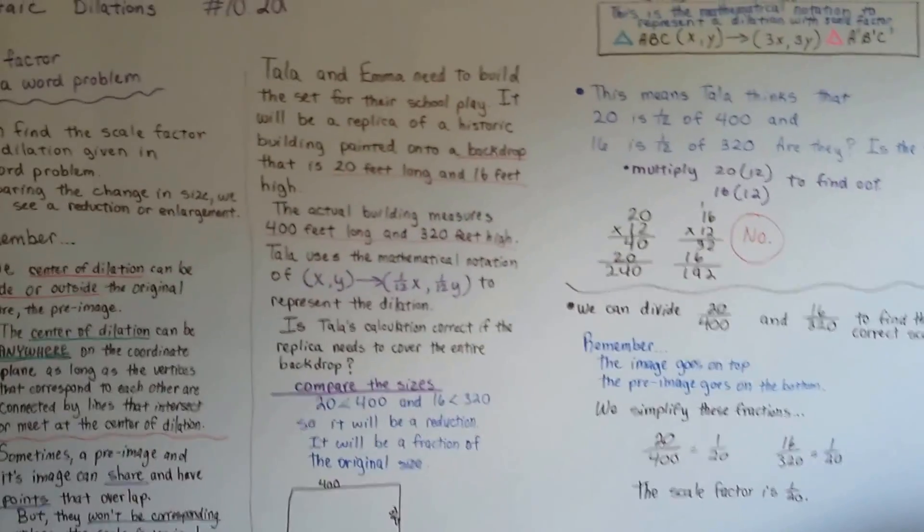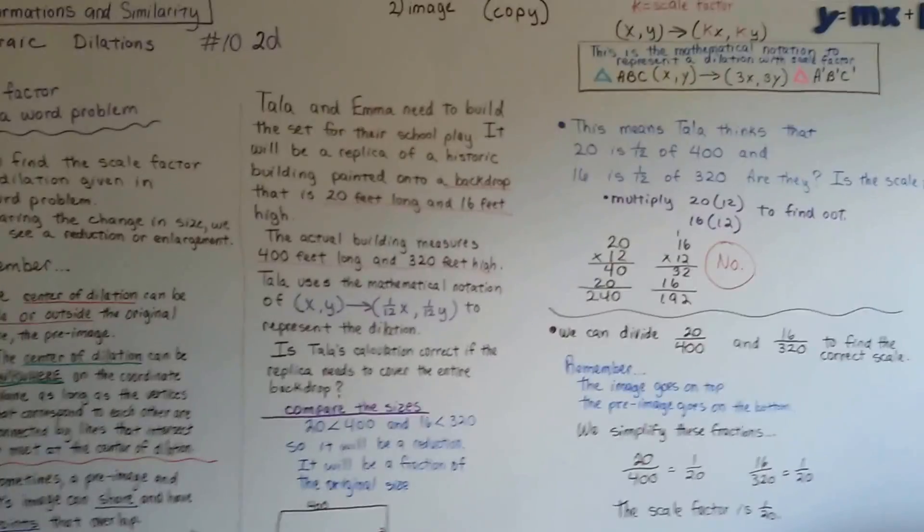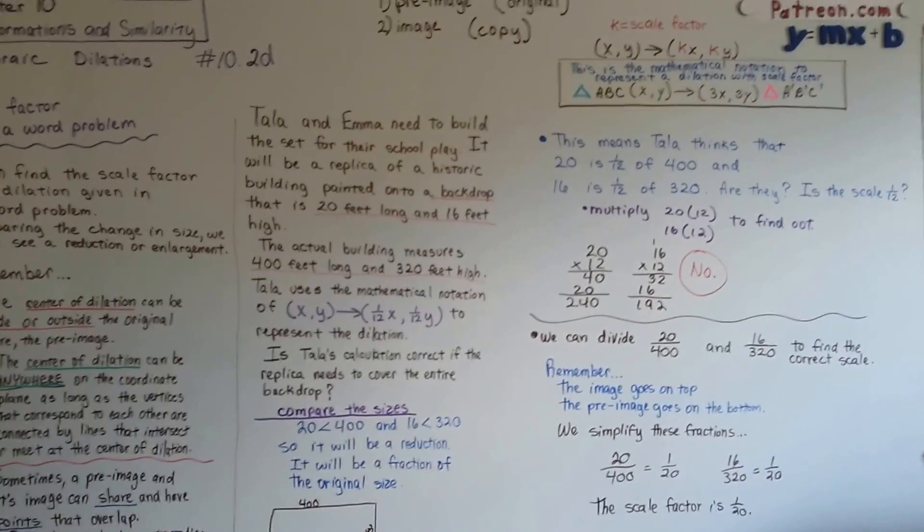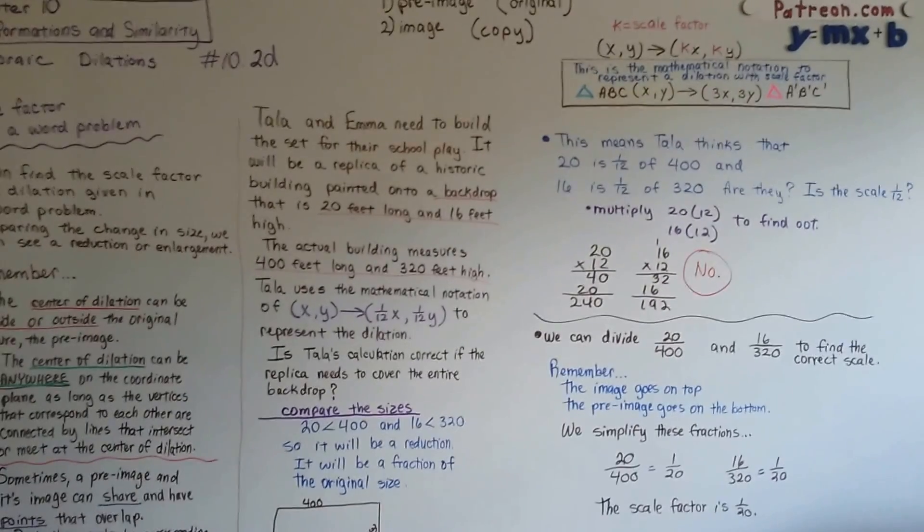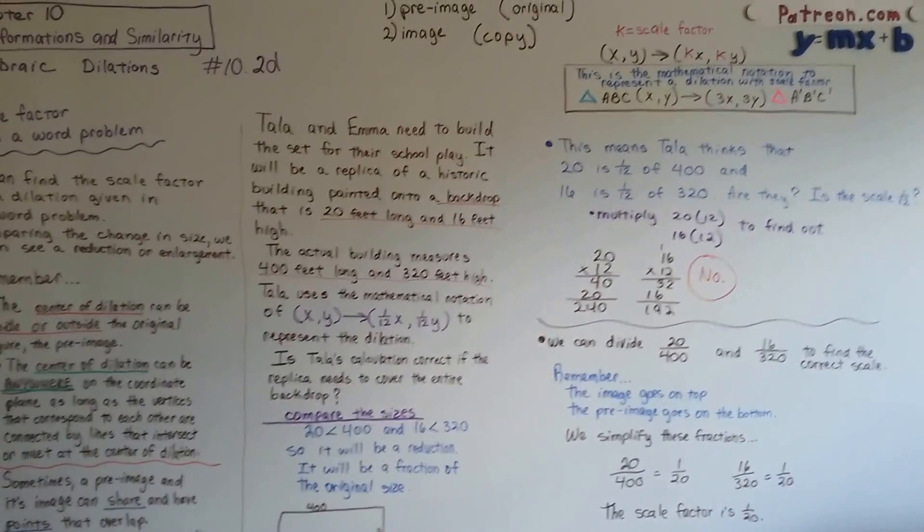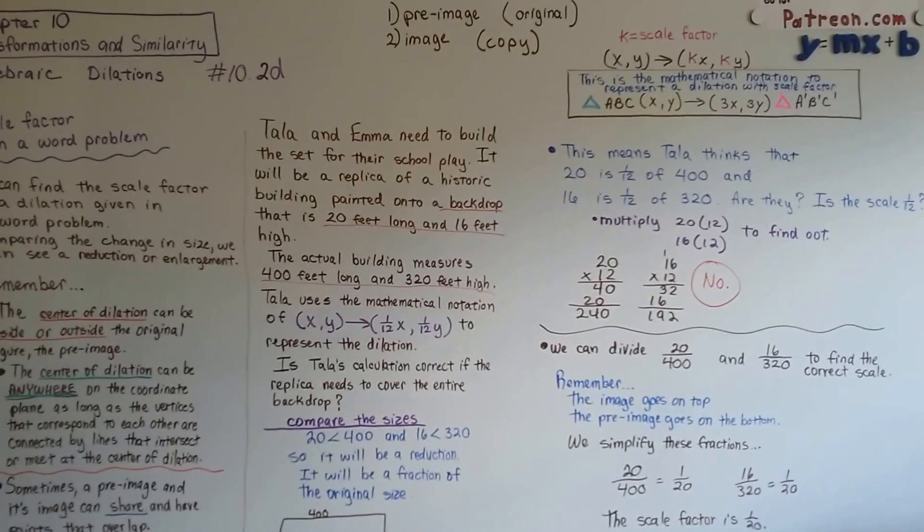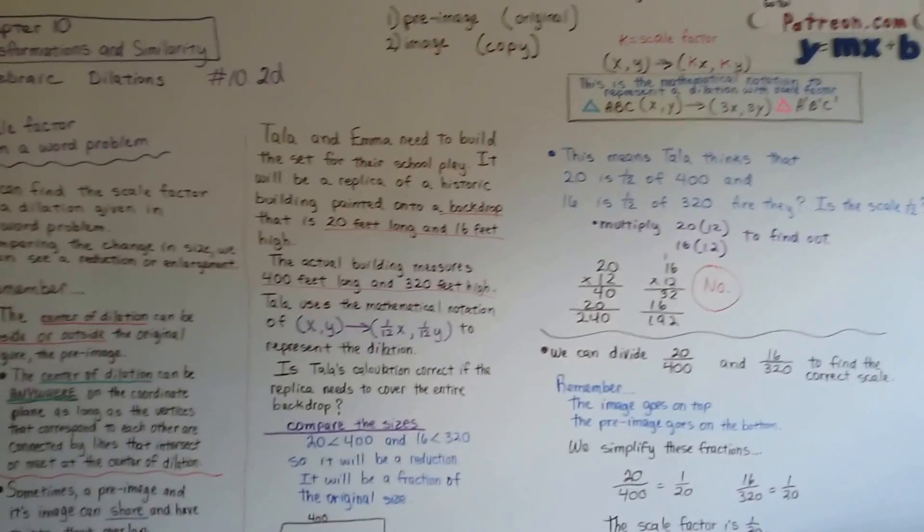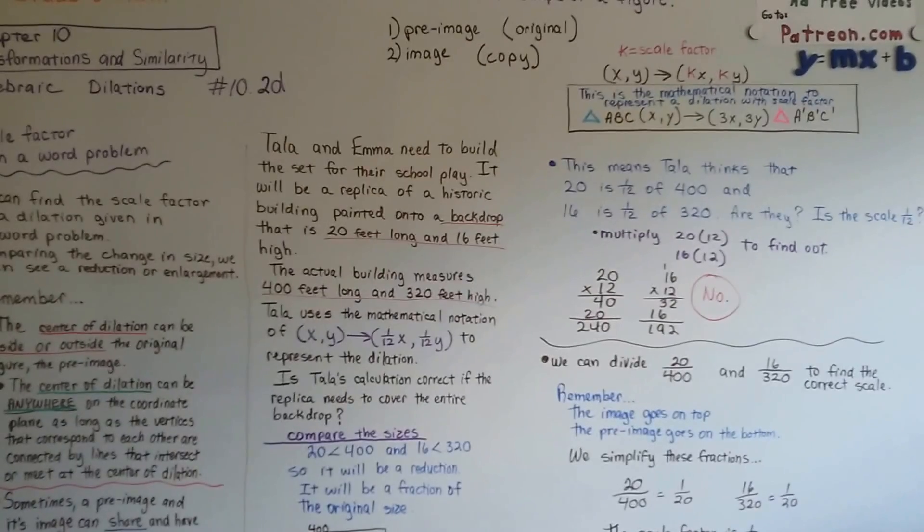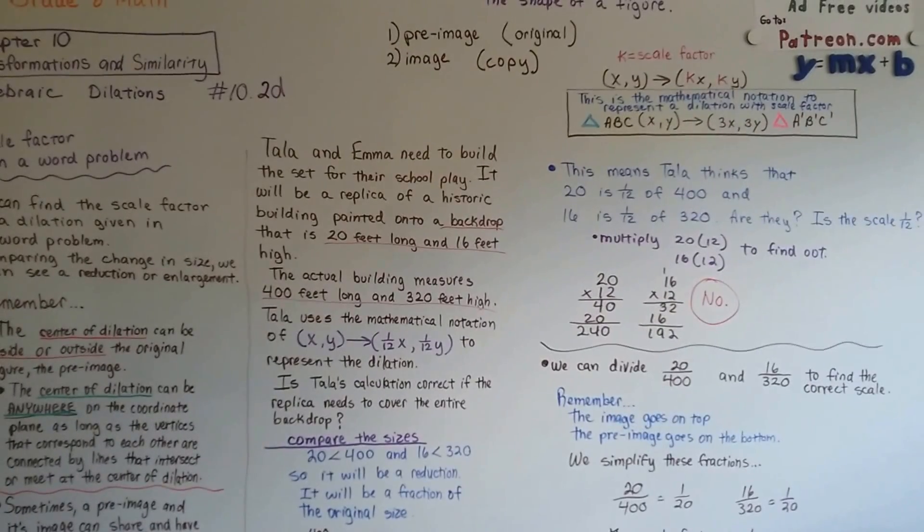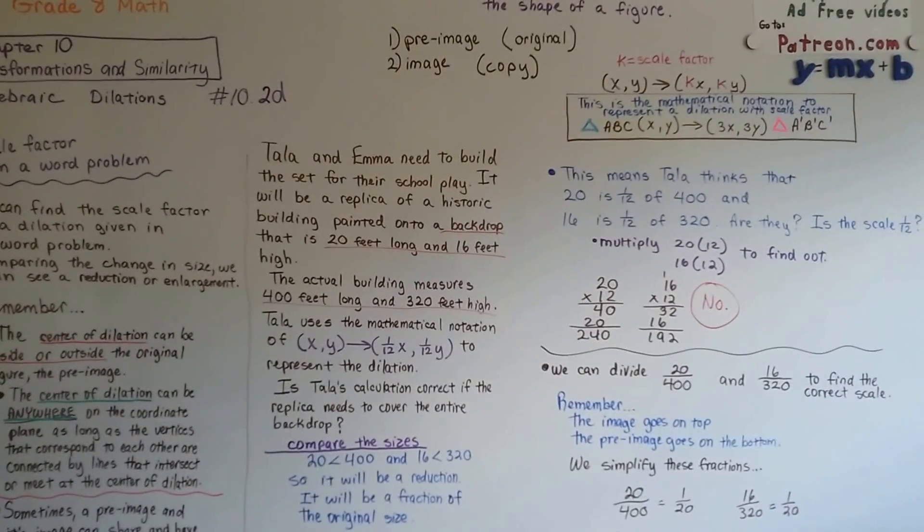That's all we did. Now in 10.2e, we're going to talk about what happens when our transformation shares a point with the original figure, when the image shares an xy coordinate with the pre-image. I hope this was helpful. I'll see you next video.